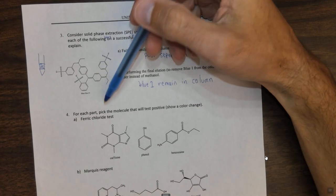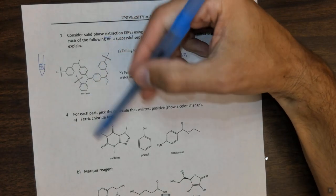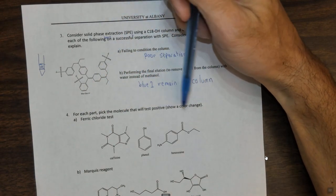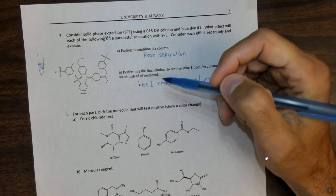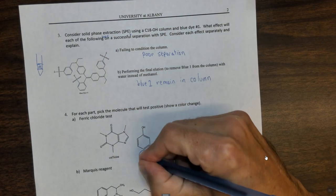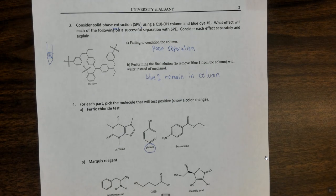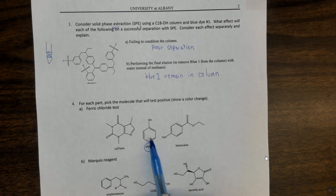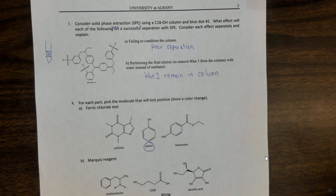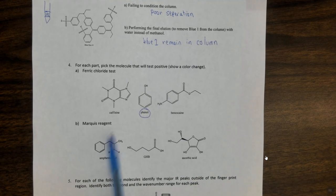Number four says for each part, A and B, pick the molecule that will test positive, show a color change. So ferric chloride test. Ferric chloride tests test for phenols. This is the one where you had the ferric chloride which is kind of a light yellow sometimes almost clear color and then it could turn a purplish color in the presence of a phenol. It depends on the specific molecule you use, the exact color it might turn, and the darkness of that color. However it does test for phenols. Unfortunately this is kind of a memorization thing.